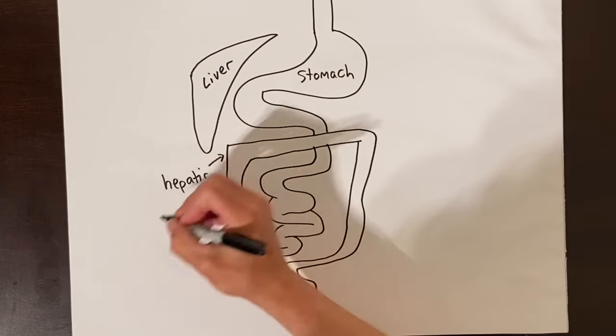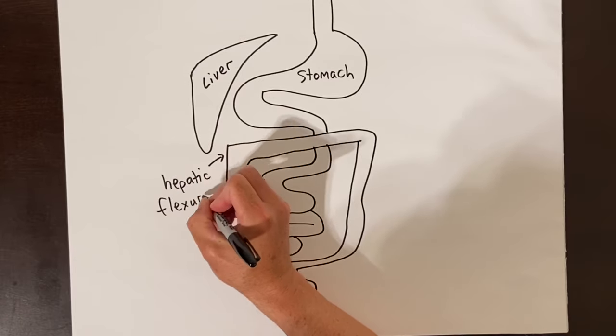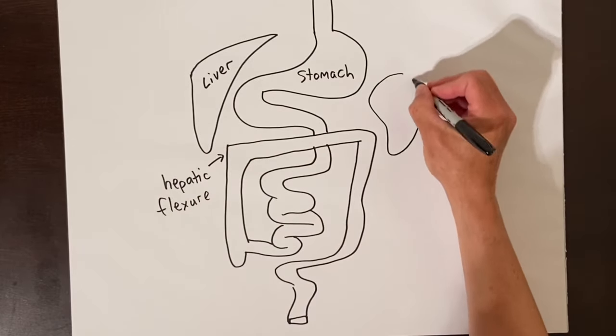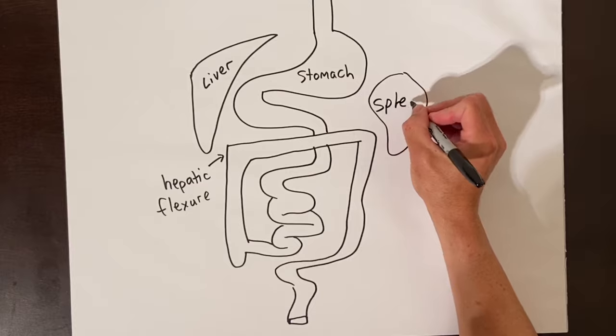The colon runs up the right side of the abdomen, across the top, then down the left side of the abdomen. The last bit of colon snakes around here and is called the sigmoid colon.